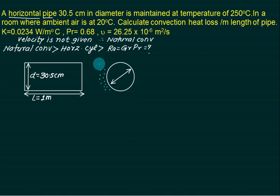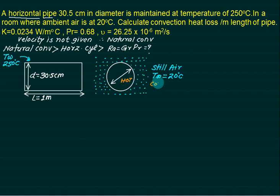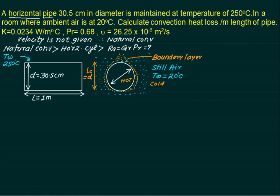The cylinder is at 250°C and the surrounding air (steel layer) is at 20°C. Molecules near the wall get heated, become lighter, and gain velocity. The boundary layer grows from the bottom to the top of the cylinder, with zero thickness at the bottom and growing along the diameter. The characteristic length is measured parallel to this boundary layer growth, so Lc = D = 0.305 m.